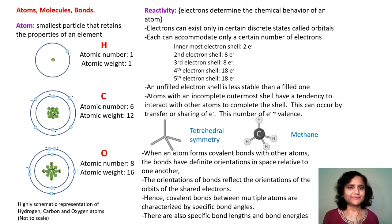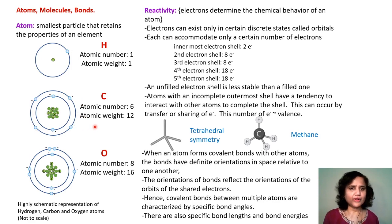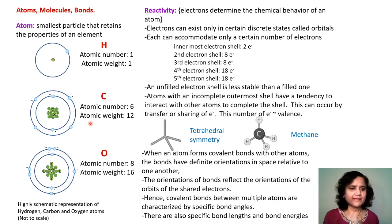To recap about the structure of atoms: atoms are the smallest particle that retains the properties of an element. Each atom has at its center a positively charged nucleus, which has positively charged protons and neutral neutrons. The nucleus is surrounded by a cloud of electrons, which are negatively charged. An atom overall is neutral, so the number of protons and electrons are equal.